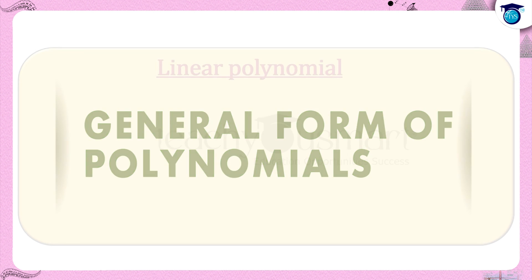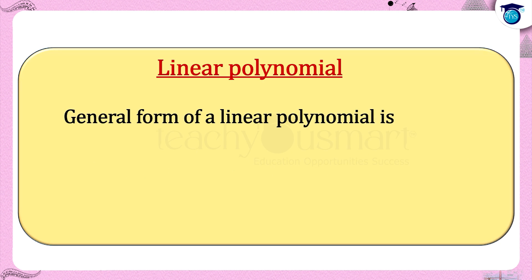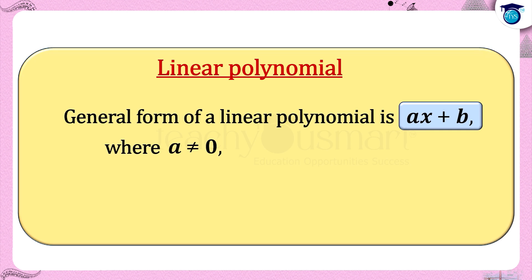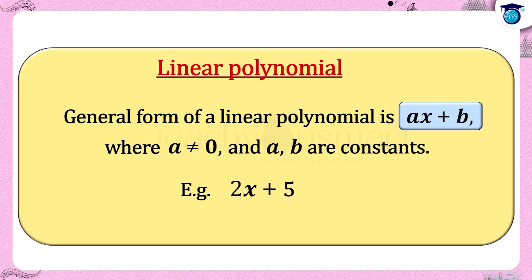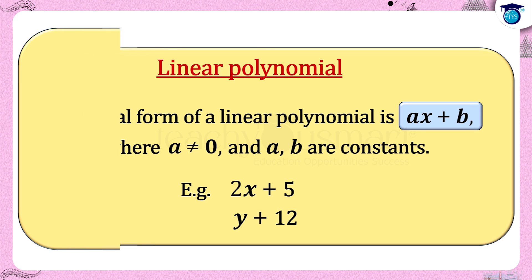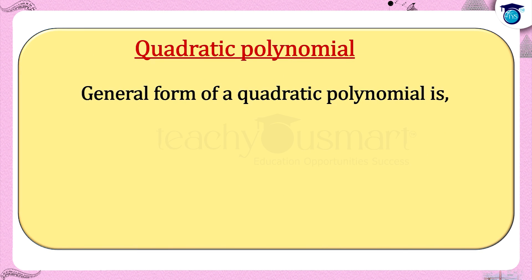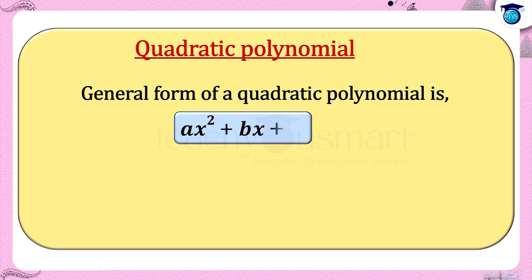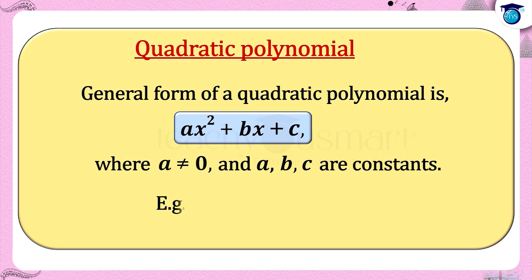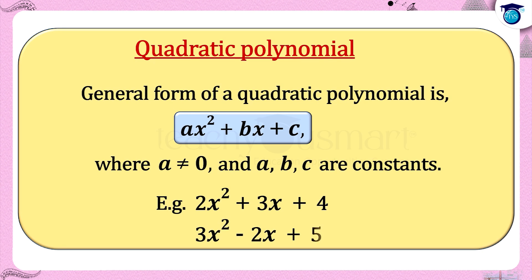Now let us see the general forms of polynomials. The general form of a linear polynomial is ax + b, where a ≠ 0 and a, b are constants. The general form of a quadratic polynomial is ax² + bx + c, where a ≠ 0 and a, b, c are constants. Examples include 2x² + 3x + 4 and 3x² − 2x + 5.